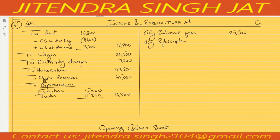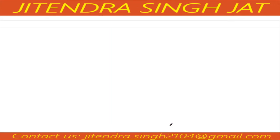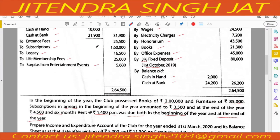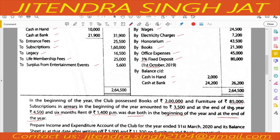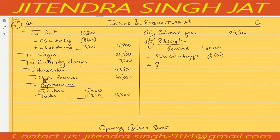Subscription received during the year is 1,60,000, as given in the Receipt and Payment Account. We subtract subscription outstanding at the beginning of the year, which is 3,500, and add subscription outstanding at the end of the year, which is 4,500. This results in a net addition of 1,000, giving subscription income of 1,61,000.